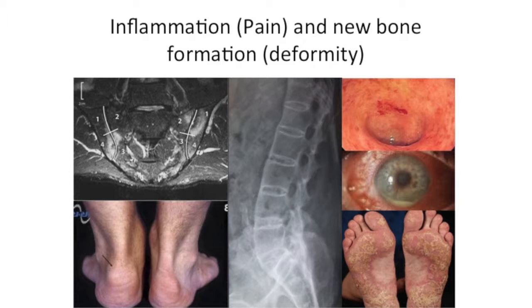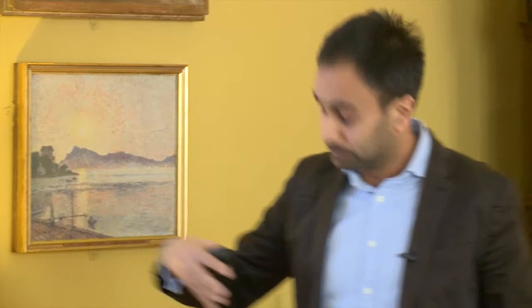You also get inflammation at the sacroiliac joints at the back, and the patients present with back pain. You get inflammation where tendons attach to bone — the Achilles is a site. As well as inflammation in the bone — sorry about the gory pictures, but if you come to a medicine talk you should see some gory pictures — you get inflammation in the gut, the eyes, and also in the skin. Not everybody, but these are the patterns we see.